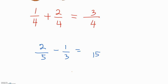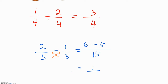To find the numerator, whatever you did to the denominator you do the same to the numerator. If you multiplied five by three, you do the same to the numerator: two times three will give you six. For the other fraction, if you multiply three by five, you multiply the numerator one by five as well, which gives you five. So six minus five gives you one.